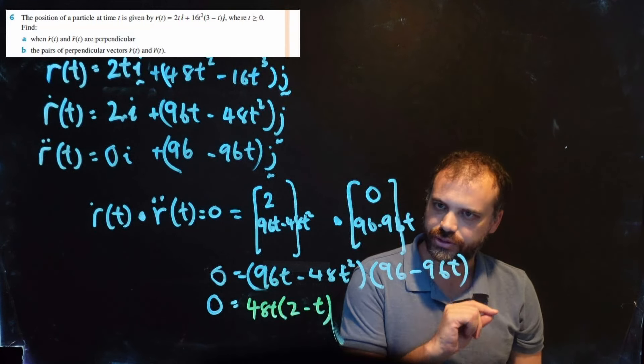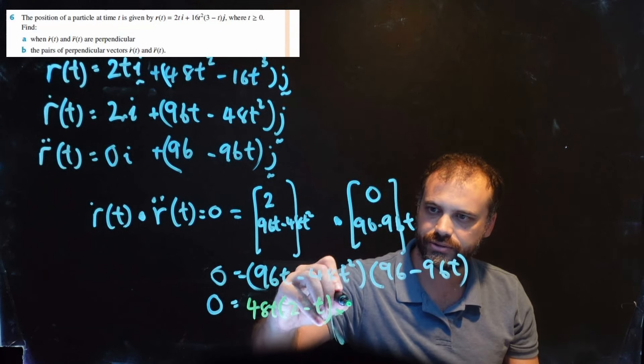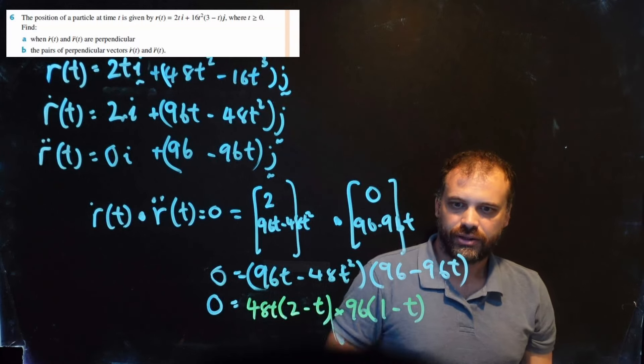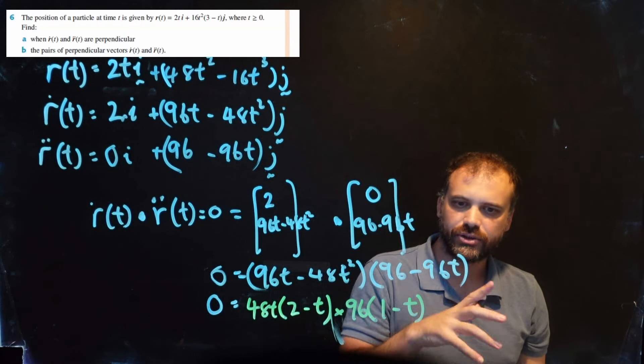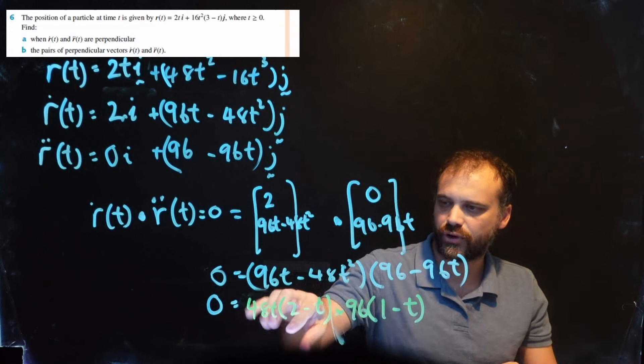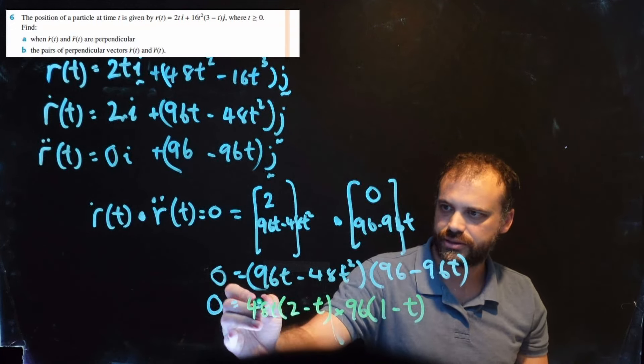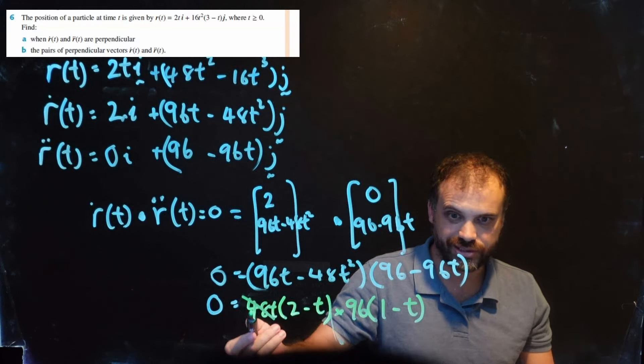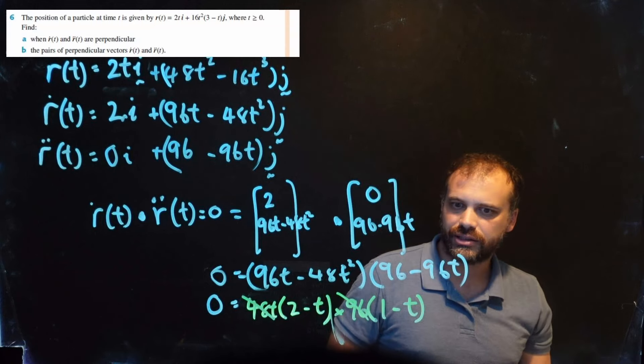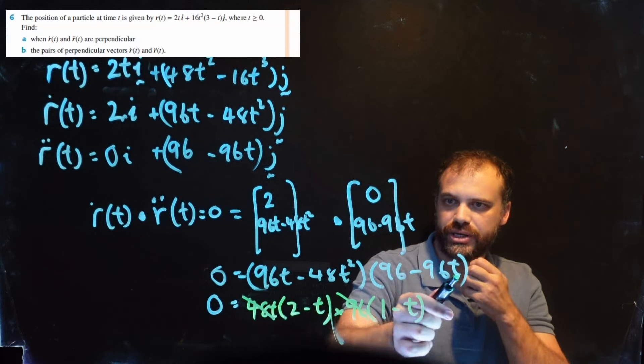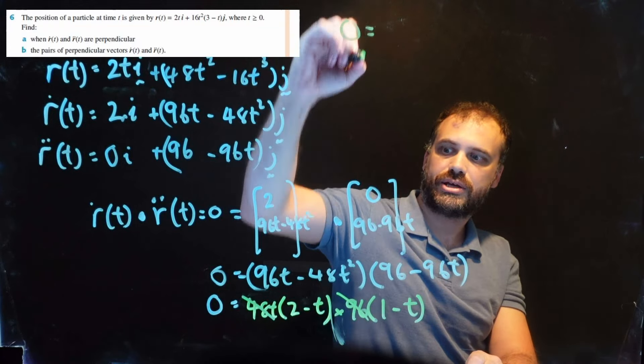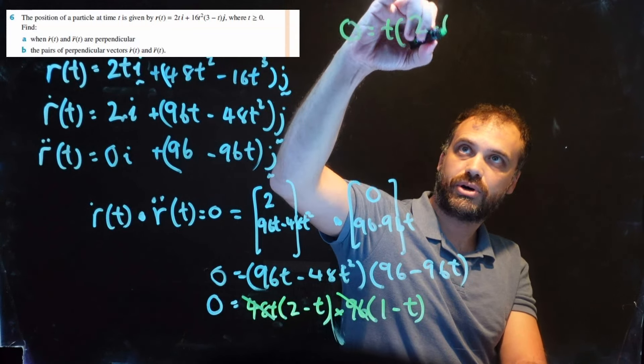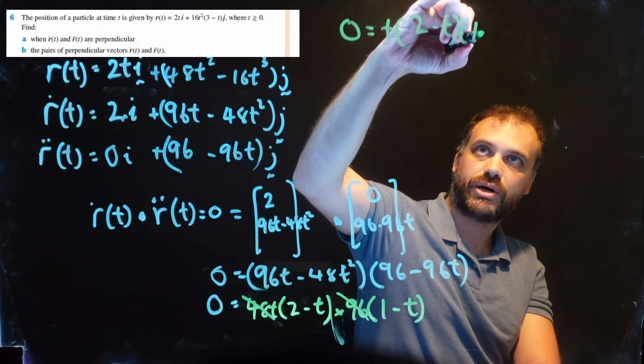And I'm noticing I can take 96 out of here. 96 gives me 1 - t. Wow. Suddenly the question doesn't look so enormous because I can divide both sides by 48 to get rid of this, and I can divide both sides by 96, because 0 divided by 96 is 0. Suddenly the question is just 0 = t(2-t)(1-t).